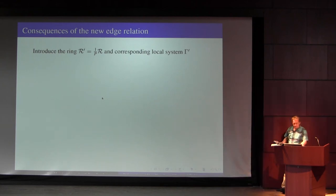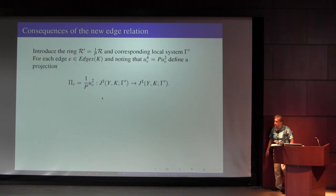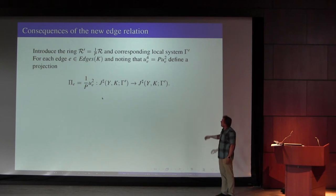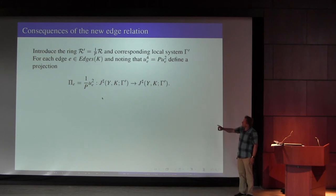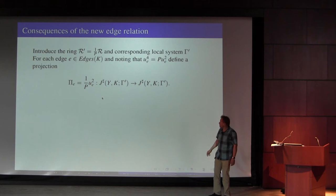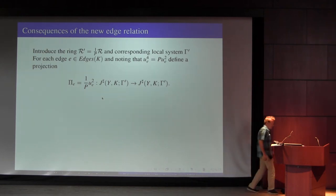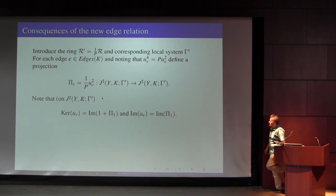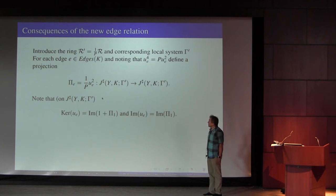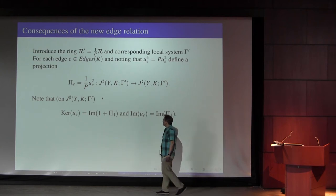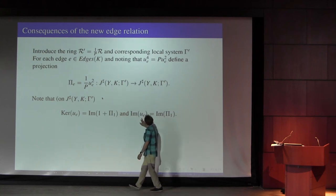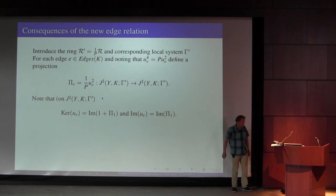Notice that we had u³ = pu, so u⁴ = pu². Now that I've allowed myself to divide by p, 1/p · u² is a projection — its square is equal to itself. In fact it's easy to check that the kernel of u_e is the image of 1 + π_e, and the image of u_e is the image of π_e.